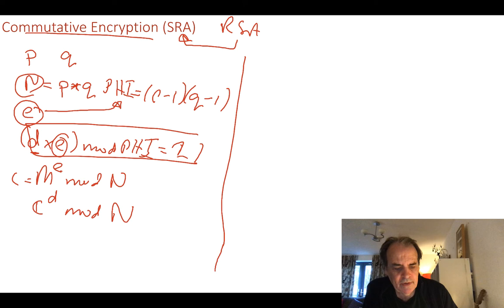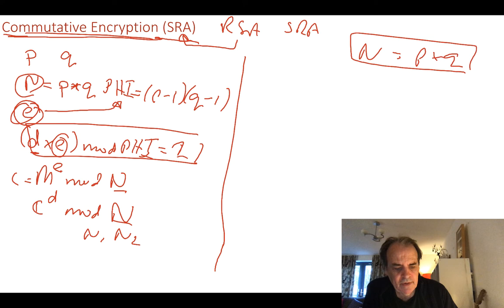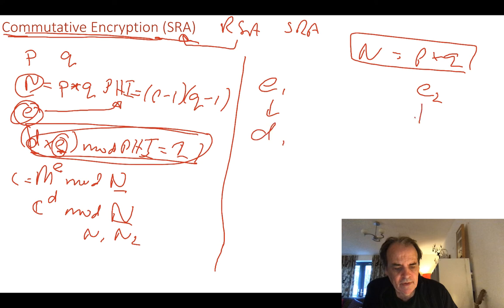Unfortunately, with two different N values this operation doesn't work, so we can't use standard RSA for commutative encryption — only for public key encryption. With SRA, both Bob and Alice share the same N value, meaning they both know P and Q. Bob creates E1 and Alice creates E2, and then Bob derives D1 and Alice derives D2.